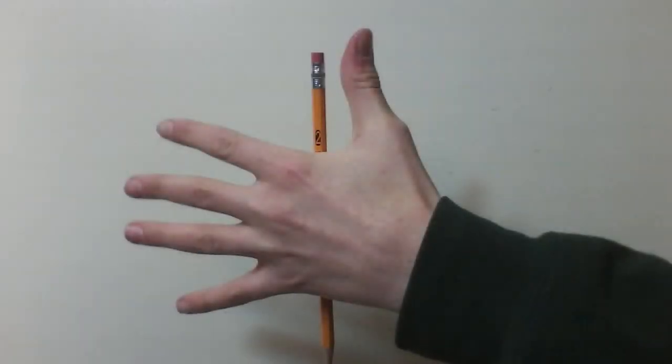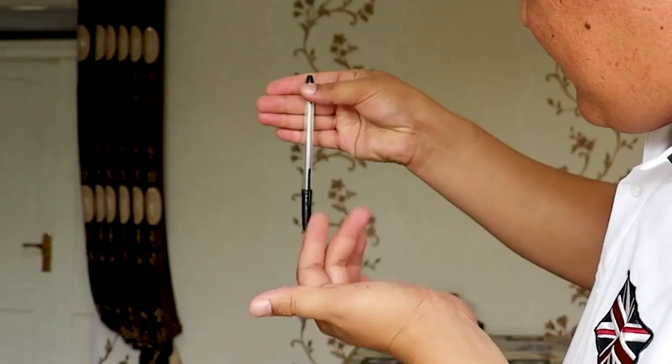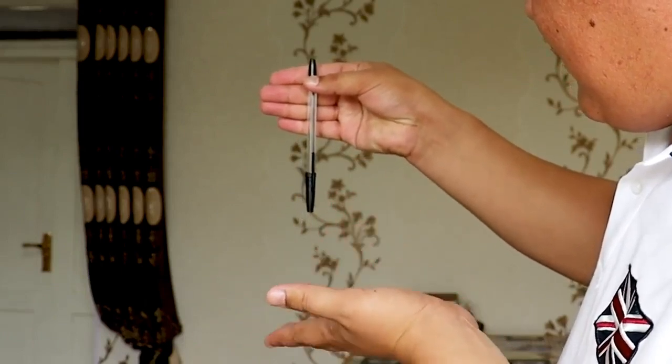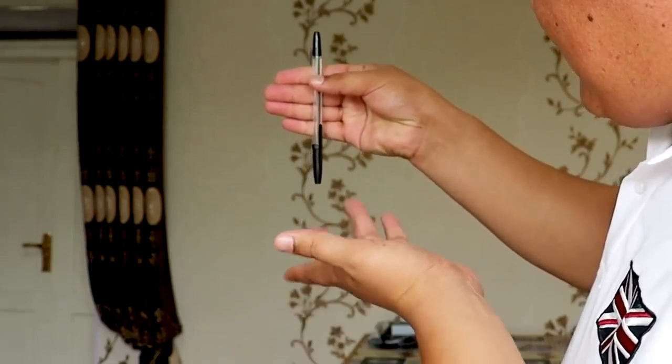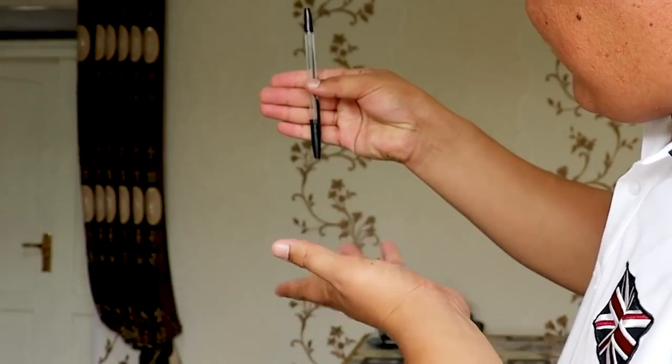Floating pen trick. It is a classic close-up magic trick that has been performed by many magicians over the years. The trick involves making it appear as though a pen is floating or rising up from the magician's palm without any apparent physical contact.